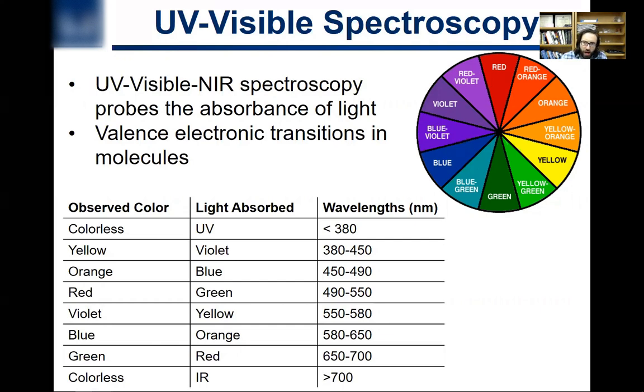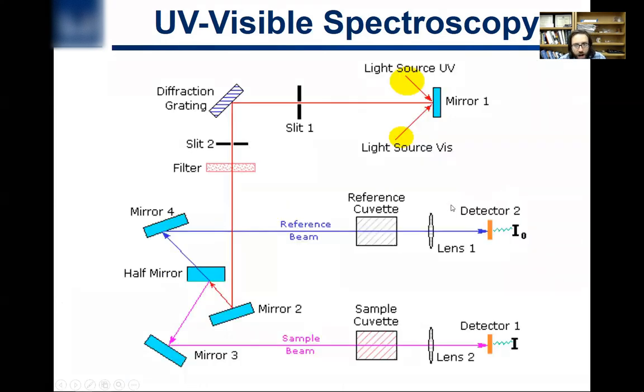But why are a lot of organic compounds yellow? Why is that the second most common color? Because they're absorbing violet light. There's some tail that's going in from the ultraviolet into the violet. They're absorbing some violet, so they're a lot of times light yellow.